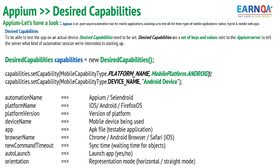Whenever we want to test an actual mobile device or a virtual device, we need to specify information like what operating system — is it Android, iOS, or Firefox OS — and what version, whether it's KitKat, Lollipop, or below. We also need to specify the mobile application name, the path, the package, the device name, whether to auto-launch, and whether to wait until it loads.